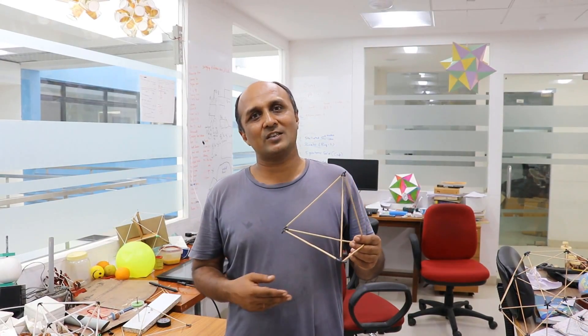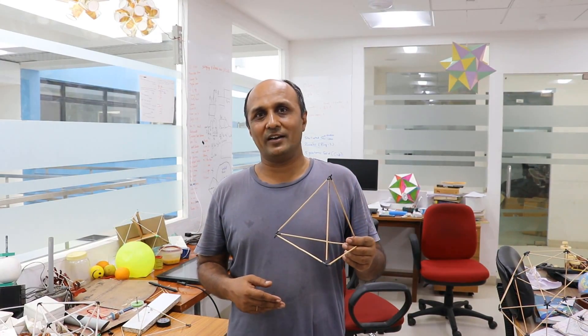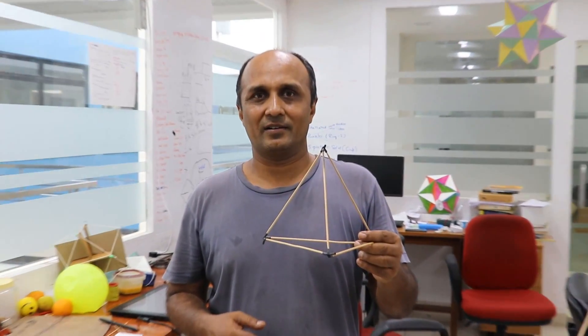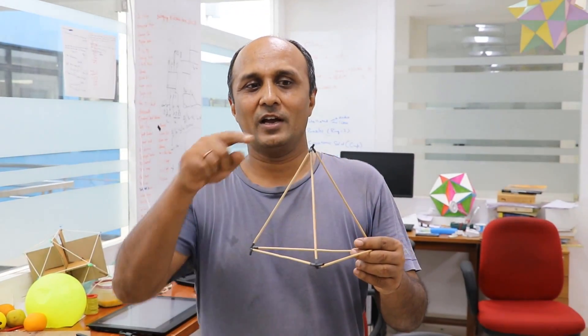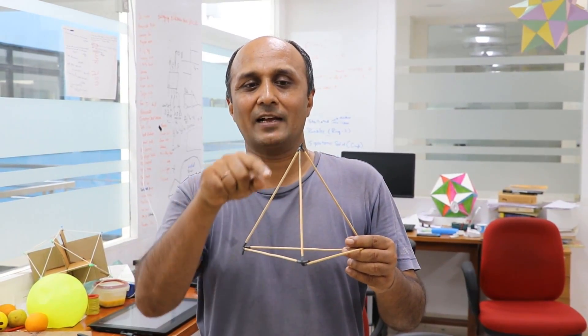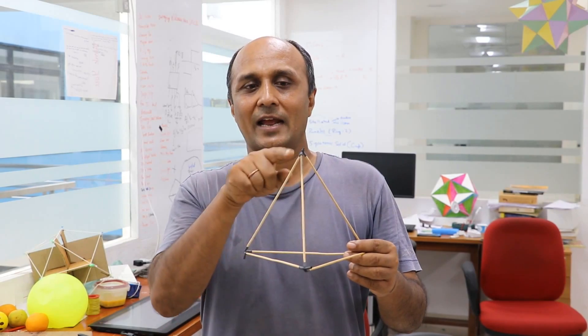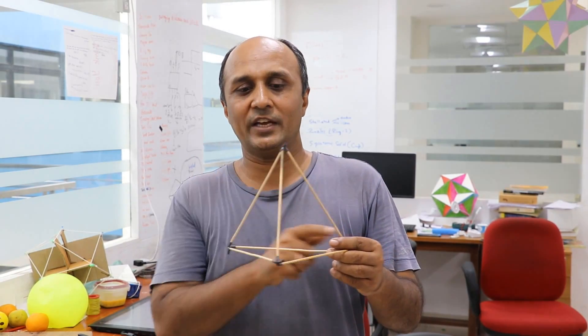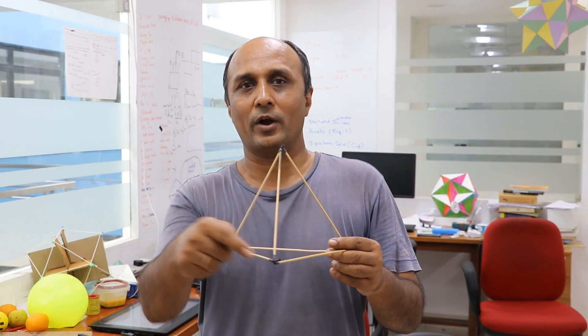Let's explore our first Platonic solid, which is the tetrahedron. As we saw, it's made by three equilateral triangles meeting at each of these four points.